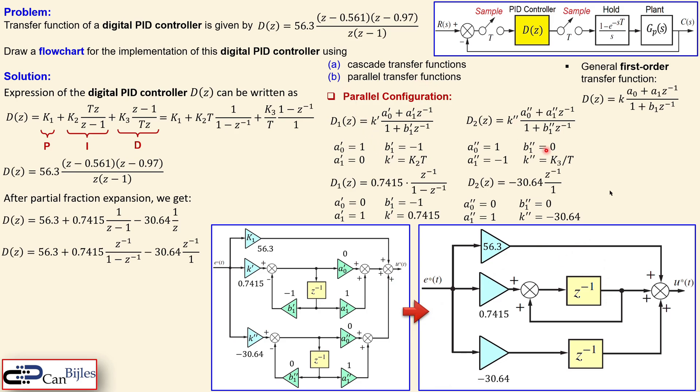This is example number six discussing the digital PID control implementation using the cascade configuration and also the parallel configuration. If you have any questions about this example please ask and I will try to answer them as soon as possible. See you next time in another video — take care.